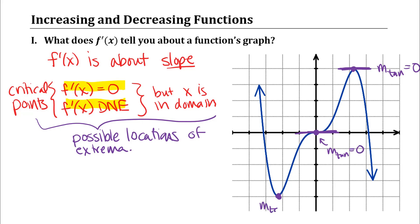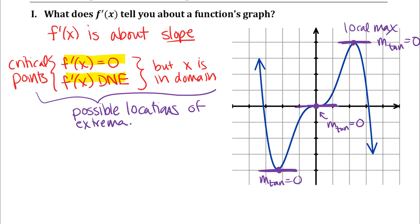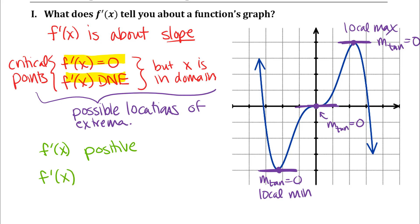This graph was intentionally chosen because there are two places where the slope of the tangent line is zero where you have a local maximum or a local minimum, but there is also one place where the slope of the tangent line is zero that's neither a local maximum nor a local minimum. So it's important to remember that critical points are possible locations of extrema, but it doesn't necessarily mean that you do have an extremum there.